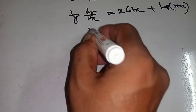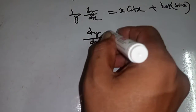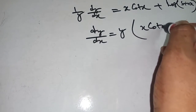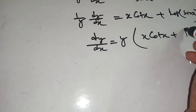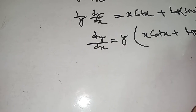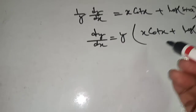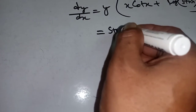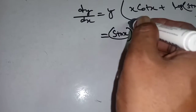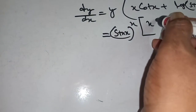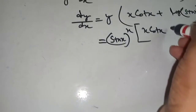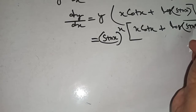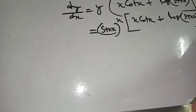So we get x into cot x plus log sin x. Now dy/dx equal to y into x into cot x plus log sin x. Putting the value of y: sin x whole to the power x into x into cot x plus log sin x.